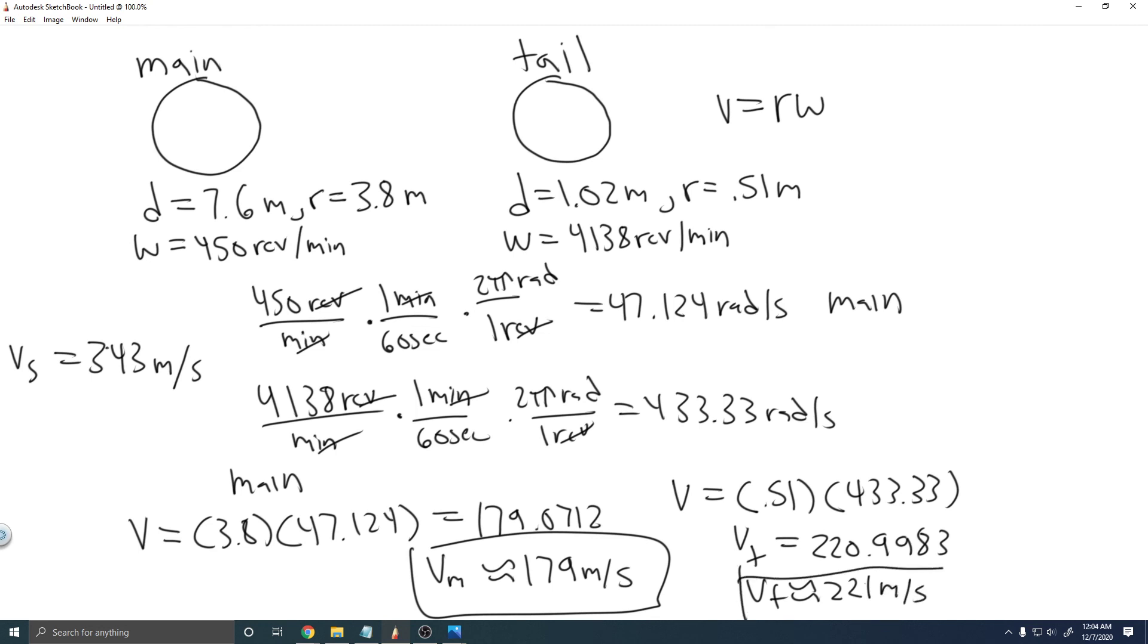So now we've got the velocity of both. This is the main. This is the tail. And so comparing it to the speed of sound, which is 343 meters per second, we know that both of them are going to be substantially slower. So the tail's about 120 off. So these are going to be your answers. And then it's just less than this. So these are your answers, and hopefully you found this useful.